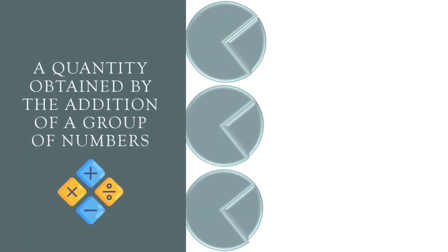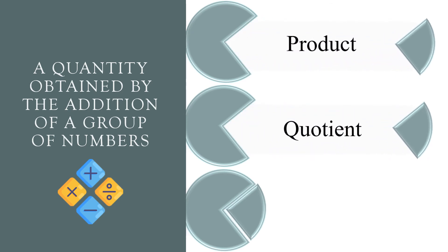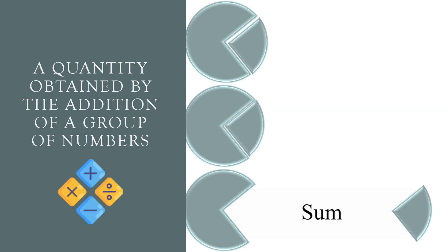A quantity obtained by the addition of a group of numbers. Product, quotient, or sum? The correct answer is sum.